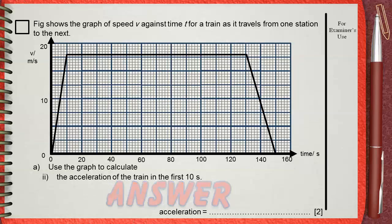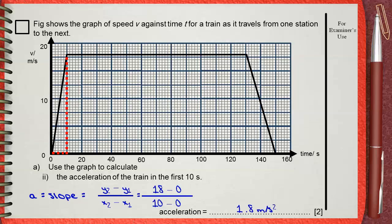Finding the acceleration from the speed time graph is by calculating the slope. Some call it the gradient. So acceleration, the slope equals y2 minus y1 divided by x2 minus x1. This is for the first 10 seconds. So, 18 minus 0 from the speed axis divided by 10 minus 0 on the time axis. This gives you the acceleration 1.8 meters per second squared.